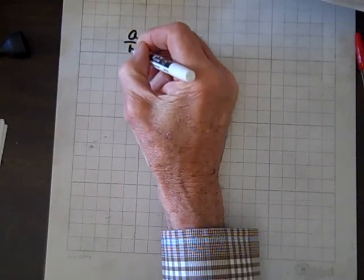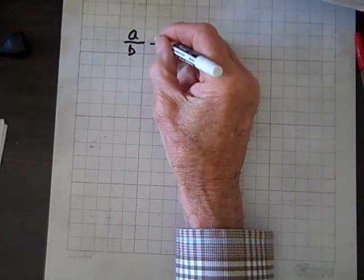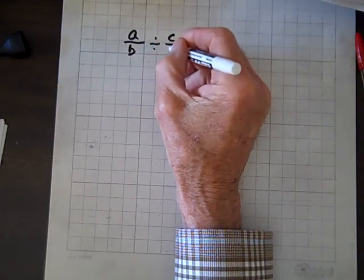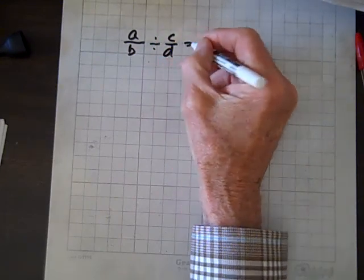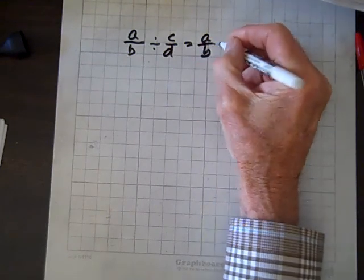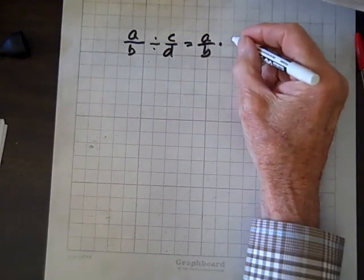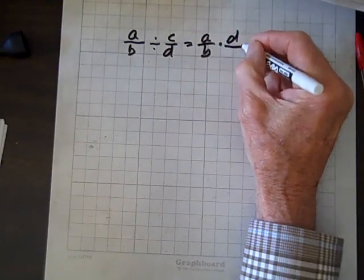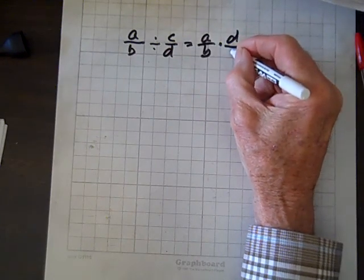The way division works: a/b divided by c/d equals a/b times d/c. We turn this into multiplication and invert the divisor.